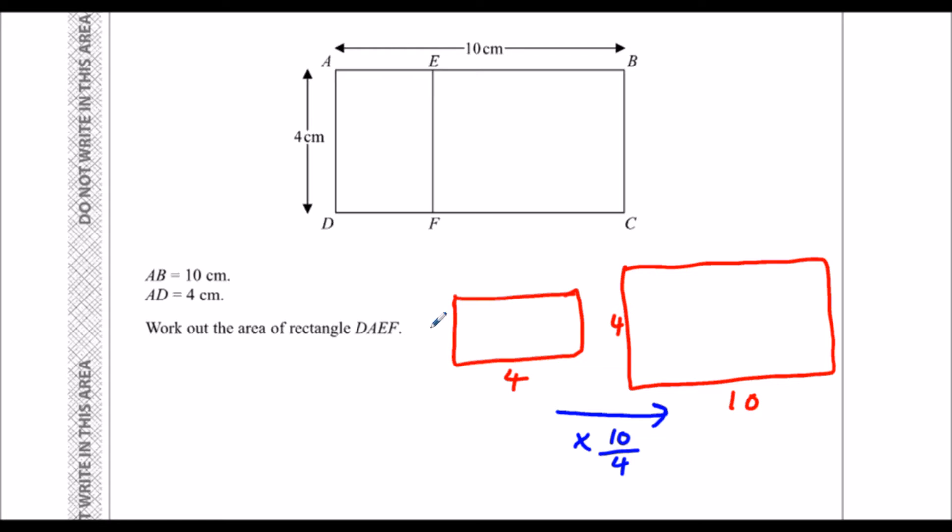Now if I want to work out this length here, I'm going to have to divide by the scale factor. So four, divide by ten over four. And whenever I'm dividing fractions, I'm going to stick twist flip. So I'm going to leave the first one.